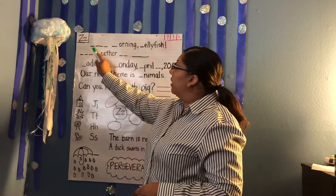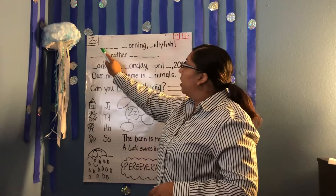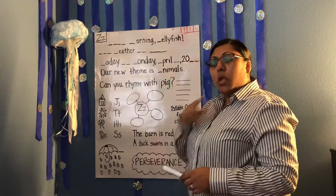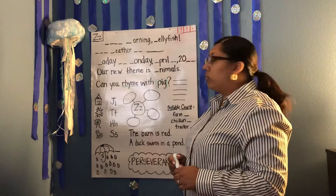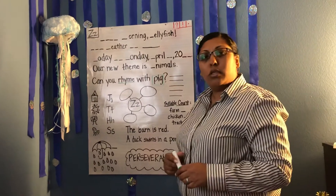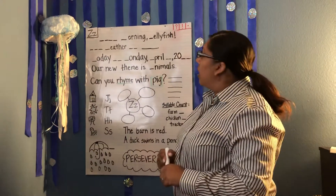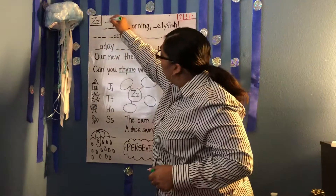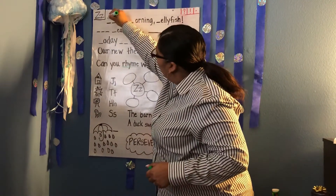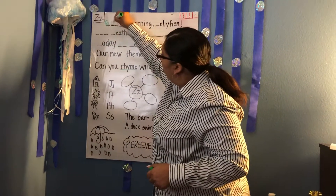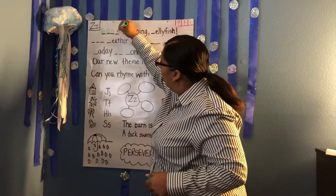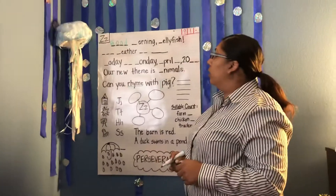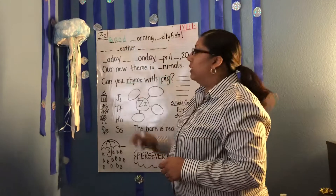The first sentence says, Good morning, Jellyfish. What does the word good mean? How do you spell the word good? Let's spell it: G-G-G. The letter G-O-O-D. That's correct. The word good is spelled G-O-O-D.